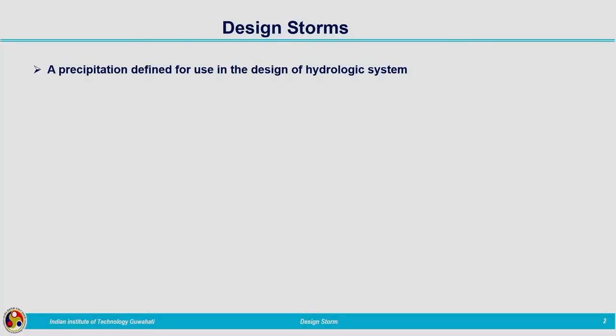In today's lecture we are going to discuss about design storm. Design storm is the precipitation which is used for the design of a hydrologic system. That precipitation defined for the design of a hydrologic system is termed as the design storm, and it can be chosen in different ways.